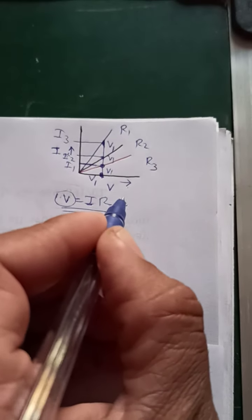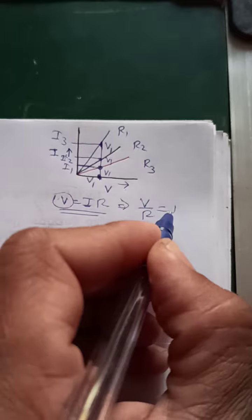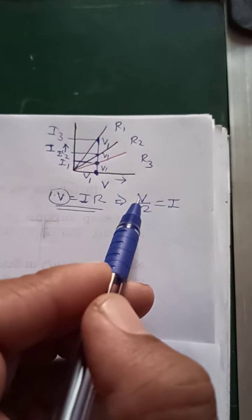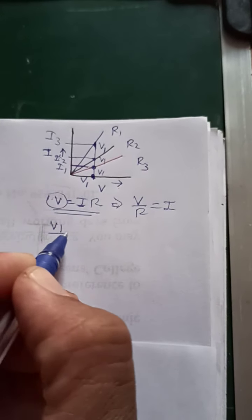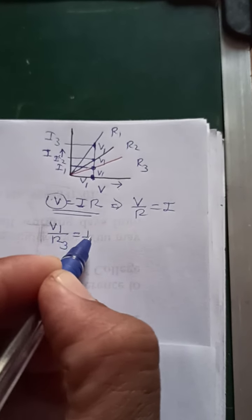So for this question, V upon R equals I. Now there's a mathematical concept here. If V is constant, then V divided by R3 equals I1.